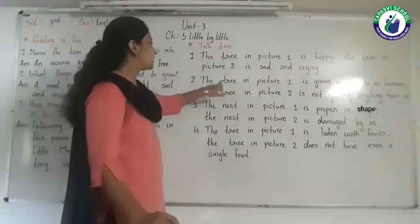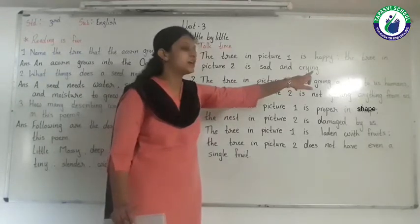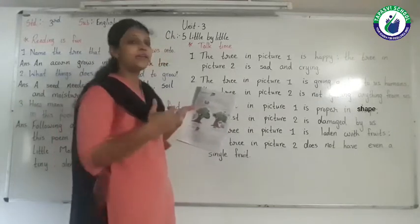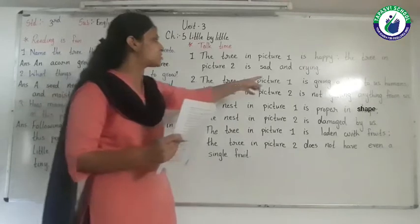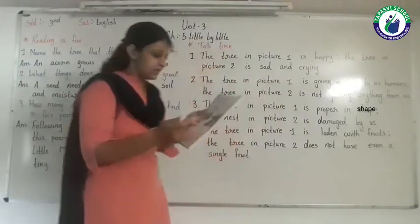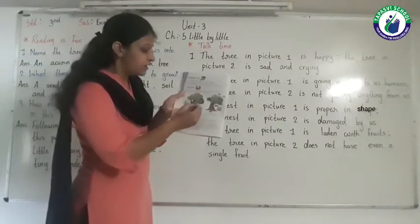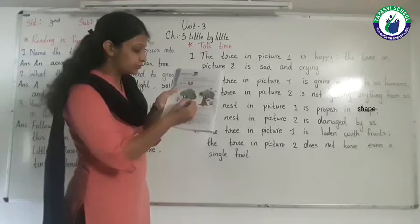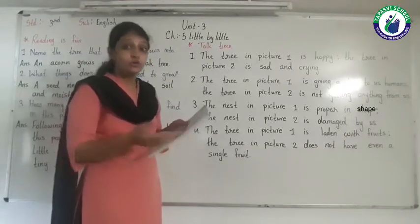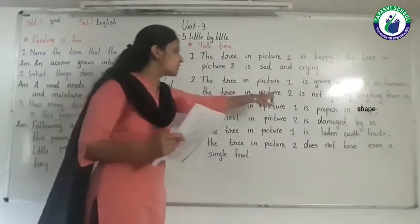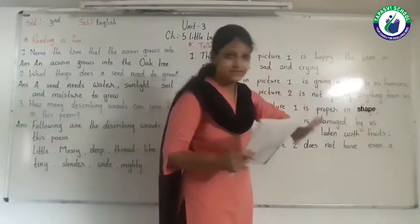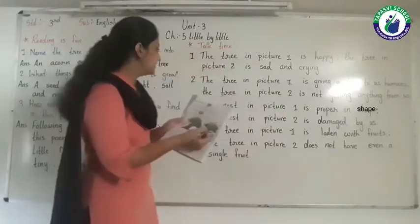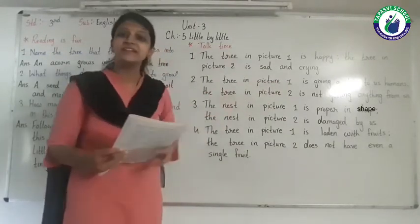Difference number two: the tree in picture one is giving a lot to us humans - medicines, vegetables, fruits, and wood. The tree in picture two is not getting anything from us. The tree in picture one gives us many things, while the tree in picture two receives nothing from us.